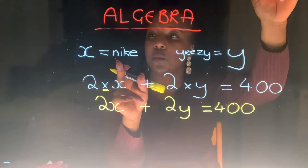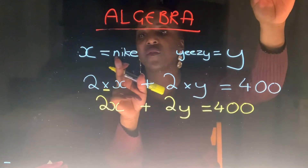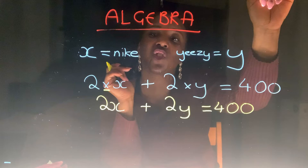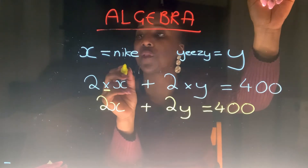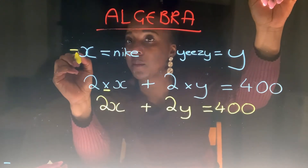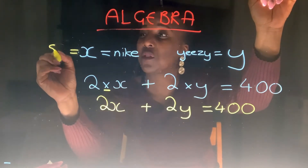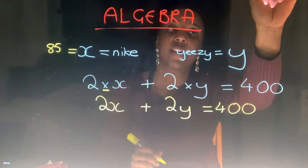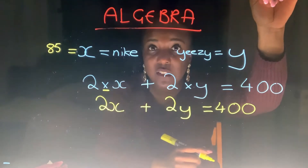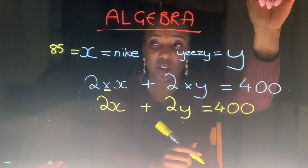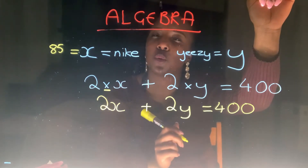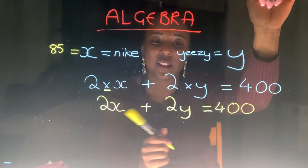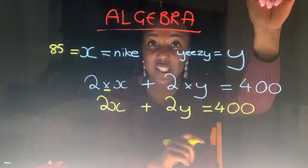Let's go back to our example. If the Nike 97s were each 85 pounds — so I'm now telling you that X is equal to 85 — I should be able to work out the cost of the Yeezys. I want you to pause the video and see if you can work out the cost of the Yeezys.